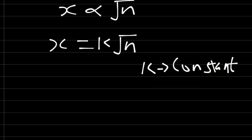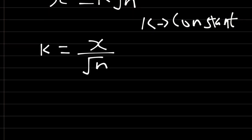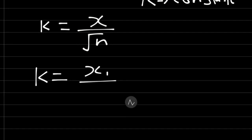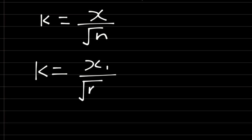We can say that k is equal to x over square root of n. Therefore, k is equal to x1 over square root of n1 and is equal to x2 over square root of n2.